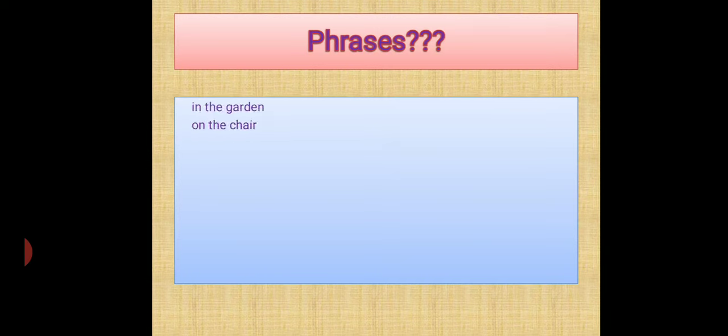Now children, moving to a different topic, that is phrase. It is also a part of a sentence. Before moving towards the definition of phrase, just look at some group of words like: in the garden, on the chair, a football player, walking in the fresh air, to cook dinner. Look at 'in the garden' — anything can happen in the garden. You may be in the garden, your brother in the garden, flowers are in the garden. So 'in the garden' is making some sense, but we cannot say what type of sense.